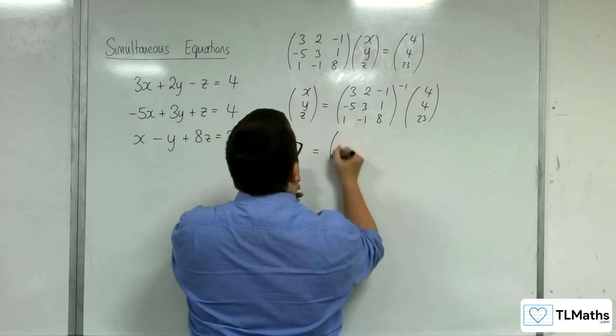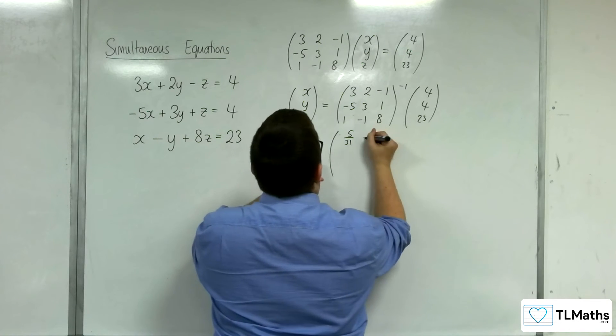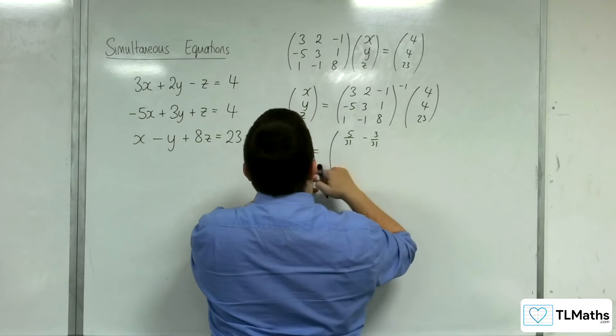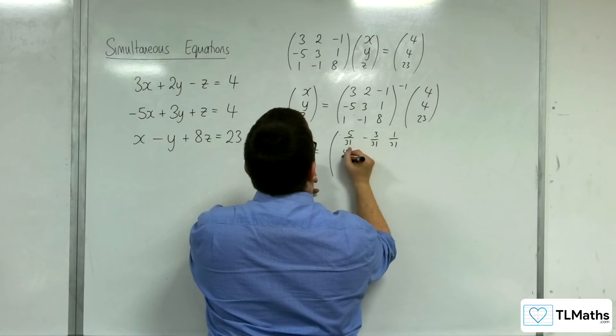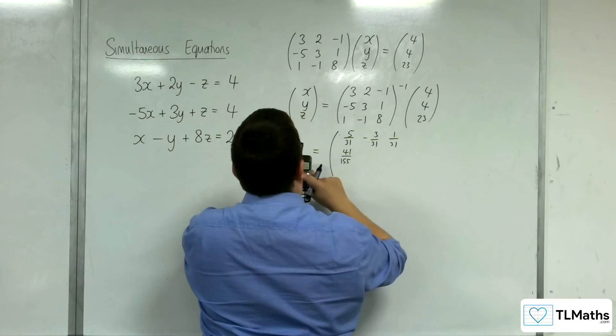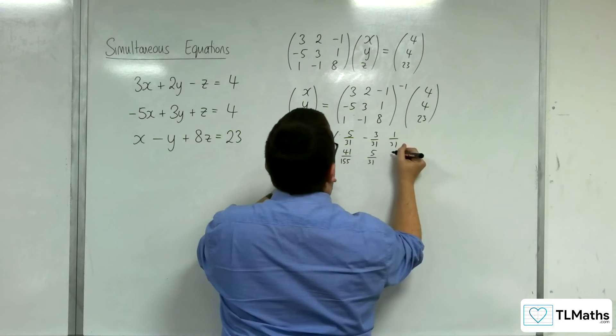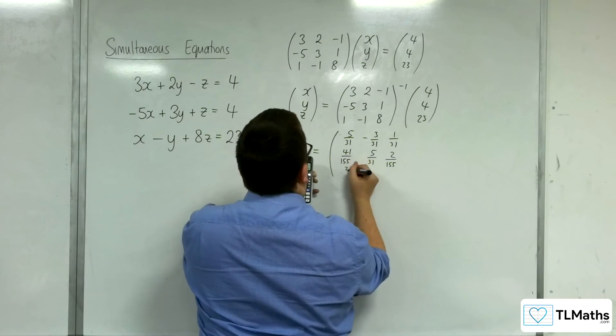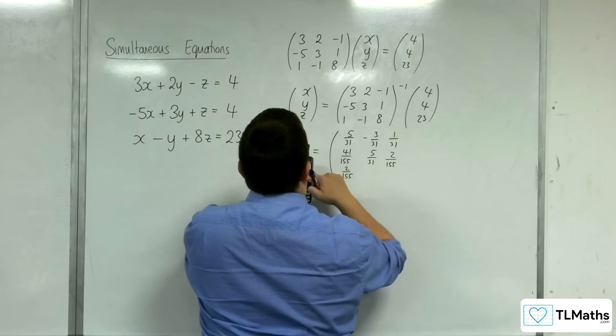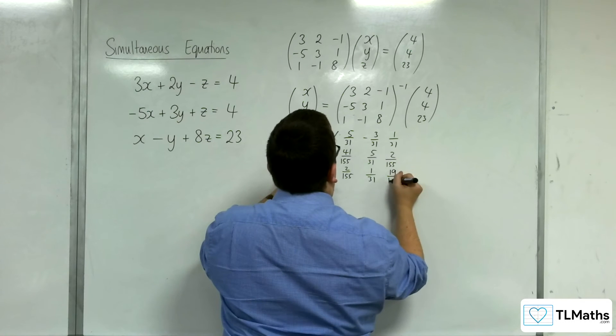Right. So, this would be 5 over 31, minus 3 over 31, 1 over 31, 41 over 155, 5 over 31, 2 over 155, 2 over 155, 1 over 31, and 19 over 155.